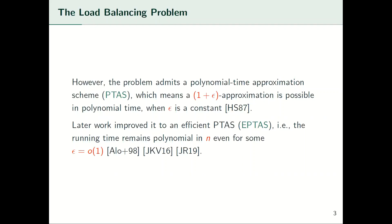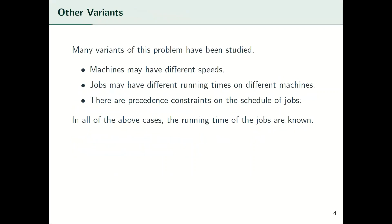Later work has improved this into an efficient PTAS, meaning the running time remains polynomial even for epsilon that is little-o of 1. Many different versions of this problem have been studied. For instance, one might be interested in the case when machines have different speeds, or the unrelated machines case where the size of a job depends on the machine that it is assigned to. There is another version where there are precedence constraints, where some jobs can be executed only if certain other jobs are already done.